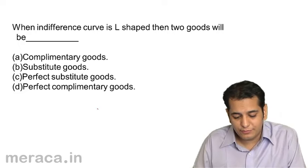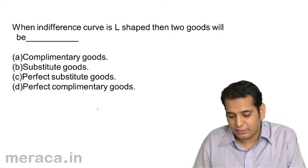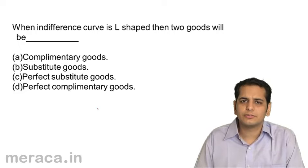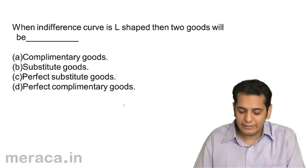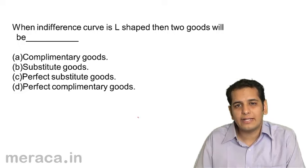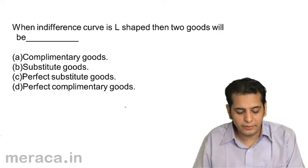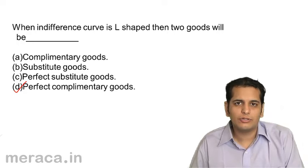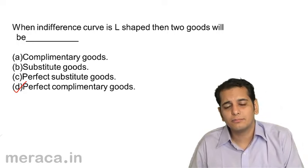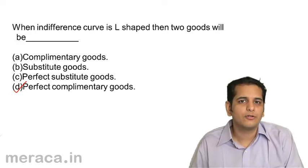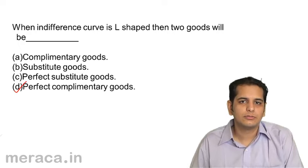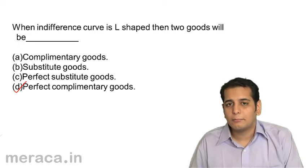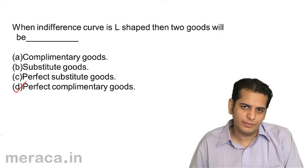Next: when the indifference curve is L-shaped, the two goods will be perfect complementary goods. We've already done this. Take the example of a pair of shoes — a left shoe and a right shoe are perfect complements of each other.